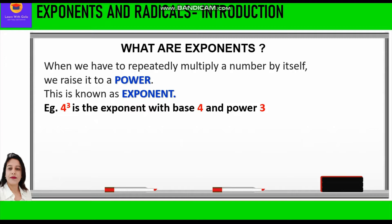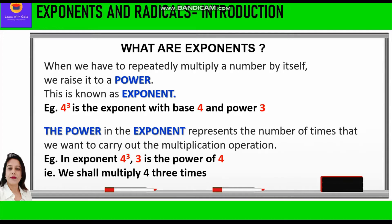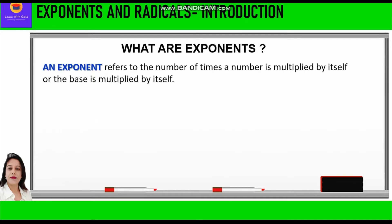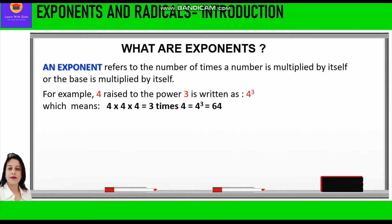For example, 4 cubed is the exponent with the base 4 and power 3. The power in the exponent represents the number of times that we want to carry out the multiplication operation. For example, in the exponent 4 cubed, 3 is the power of 4, that is, we shall multiply 4 three times. So 4 raised to the power 3 means 4 into 4 into 4, which is equal to 64.